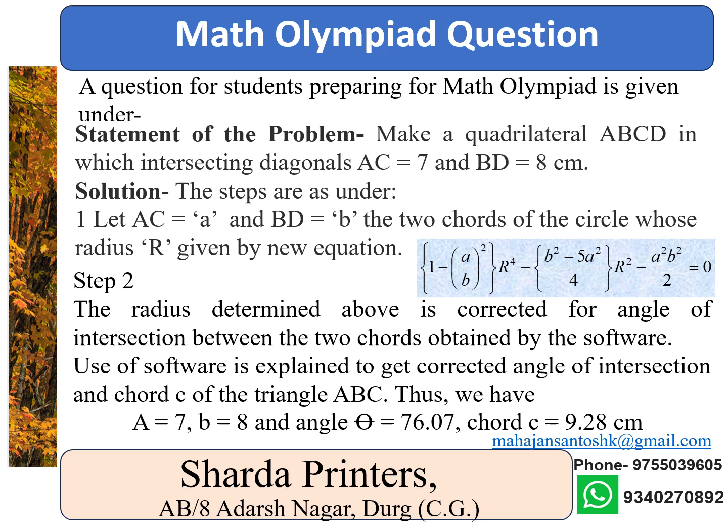A question for students preparing for math olympiad is given. Draw a quadrilateral ABCD with intersecting diagonals AC equal to 7 and BD equal to 8 cm. The intersecting angle of the diagonals, angle theta, is greater than 45 and less than 90 degrees.